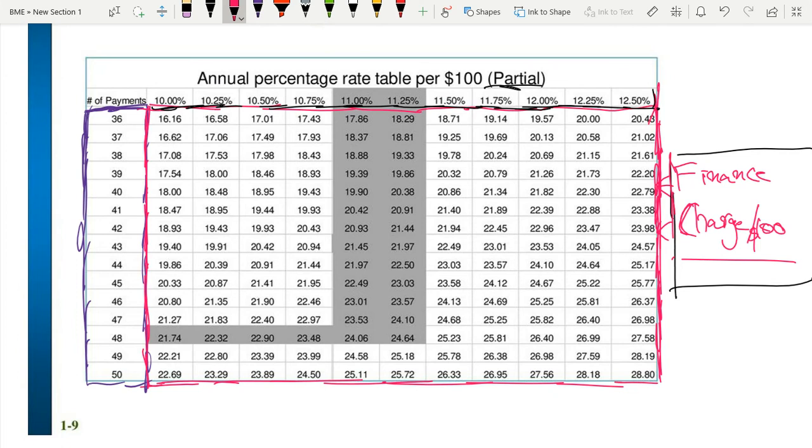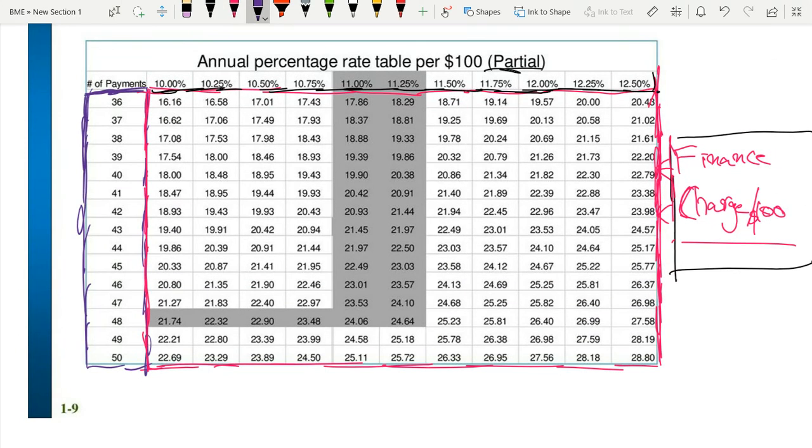Now, if we had 39 monthly payments and a finance charge of $18 per $100, our annual percentage rate would be—over the course of 39 months with an $18 finance charge per $100, our APR would be 10.25%. That's how you would calculate it.